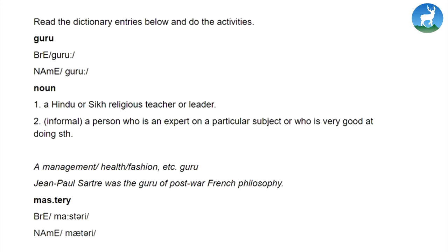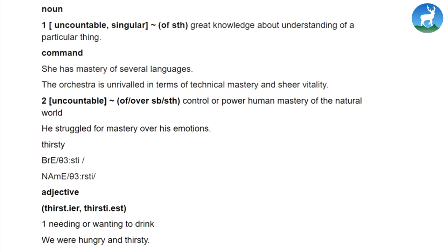Next we have 'mastery', and we have both the British and American pronunciations. The British pronunciation is 'mastery' while the American says 'mastery', where the sound of A and E can be noticed. Mastery belongs to the word class noun and is uncountable. The first meaning is great knowledge about or understanding of a particular thing. Example sentences: 'She has mastery of several languages' and 'The orchestra is unrivaled in terms of technical mastery and sheer vitality.'